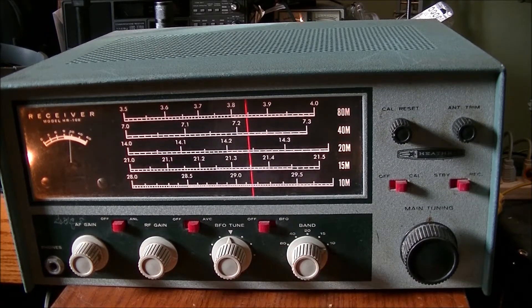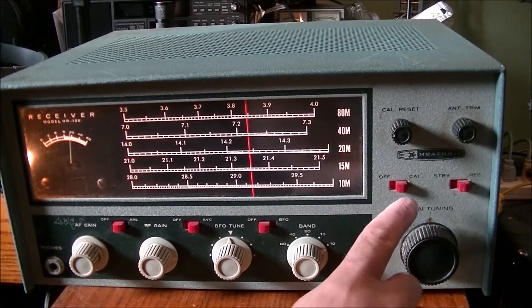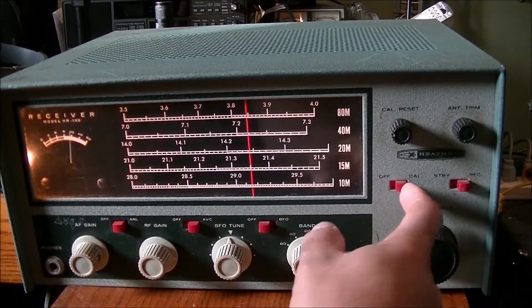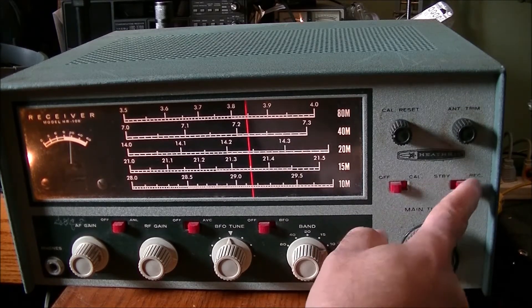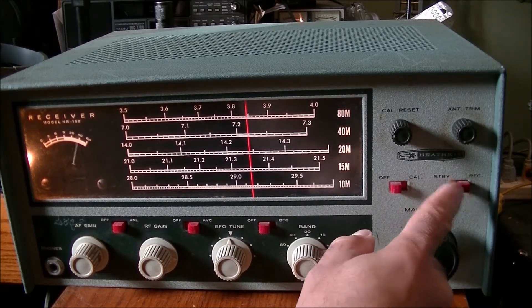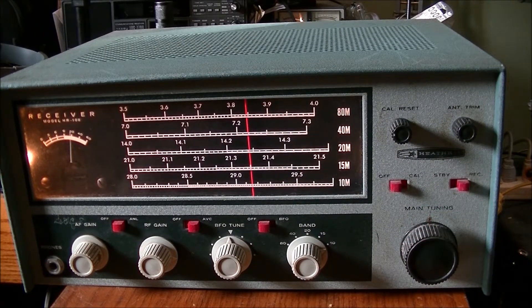BFO basically, and a BFO switch here on and off, and the band switch which goes 10, 15, 20, 40, 80 as suggested on the plate here. Now we have off, calibrate button, and on-off button I should say, and a standby and receive. So let's have a look at the back side.